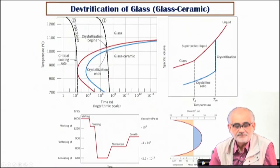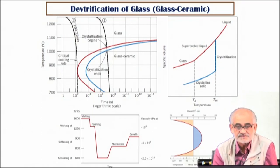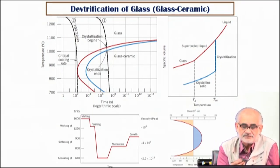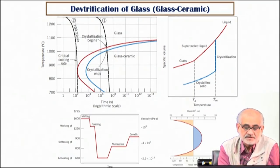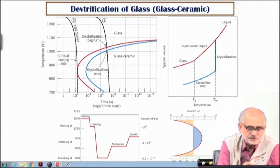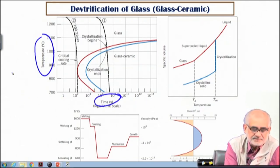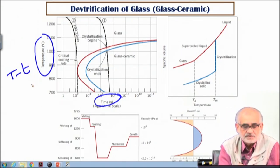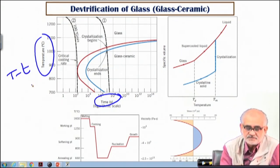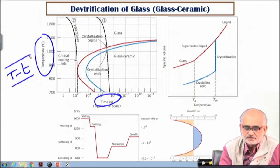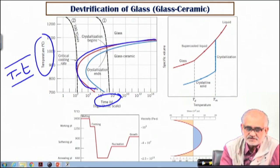Now we saw glimpses of de-vitrification. If you have a kinetic diagram — temperature on one axis and time on the other — this is a TTT-type diagram where we are plotting the progress of certain transformations. The red line here is the beginning of a transformation, the blue line is the end of the transformation. If you are able to cool following a slow path, you are going to end up with practically the whole material as crystal — you can de-vitrify the entire bulk of the glass.